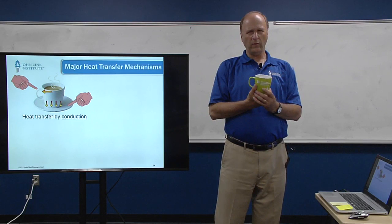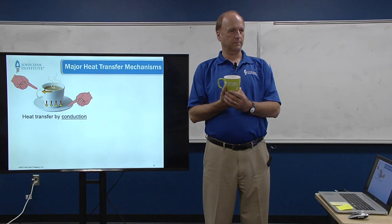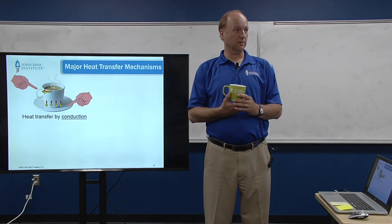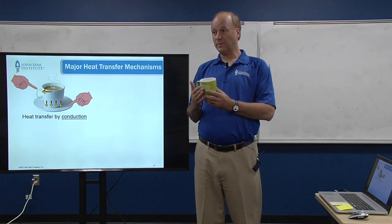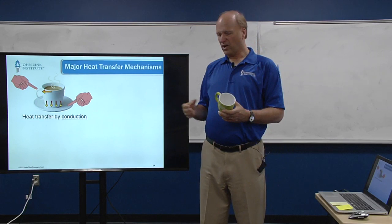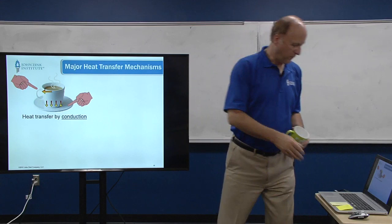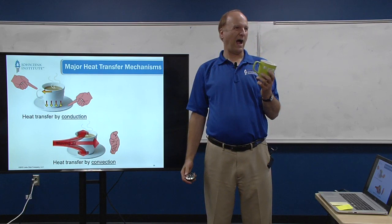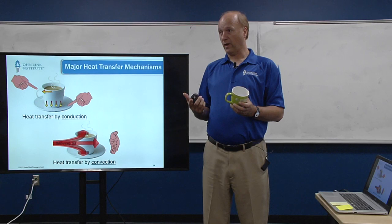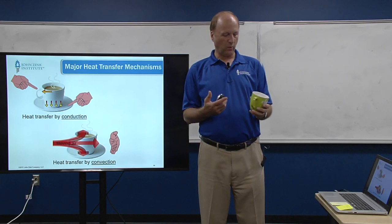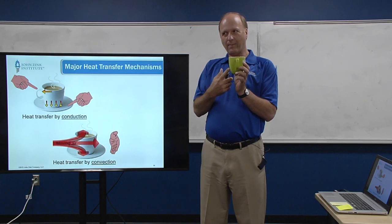We can look at heat transfer mechanisms with something as simple as a coffee mug. Why do we make mugs out of ceramic? They're fragile — if you drop one it breaks. But ceramic keeps the heat in and keeps the heat off the person holding it, so you don't burn your hand. That's conduction — direct contact. If your coffee is too hot and you blow on it, that's convection. You could blow against the ceramic, but since it's a good insulator, we usually blow against the liquid to cool it faster.